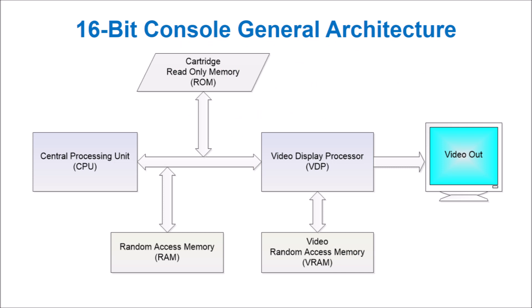As an introduction, here's a high-level representation showing the typical architecture used in the 16-bit consoles. The CPU reads information from the game cartridge and copies the required graphical data to the Video Random Access Memory, or VRAM. The VDP is able to read the VRAM and then display the resulting graphics on screen.